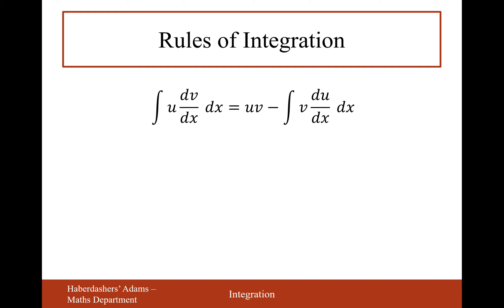We've finished integration by substitution and now move to integration by parts — similar to the product rule for differentiation. We take two functions multiplied together, label them u and dv/dx. We differentiate one and integrate the other. The formula is: ∫u(dv/dx) dx = uv − ∫v(du/dx) dx. This converts one integral into a simpler one, giving two parts in the answer.